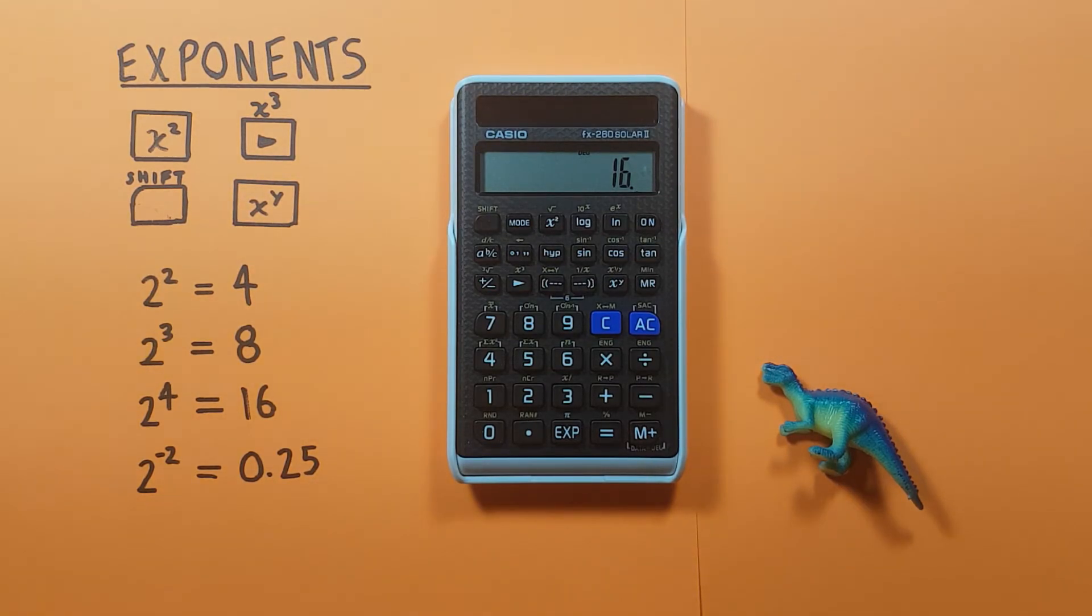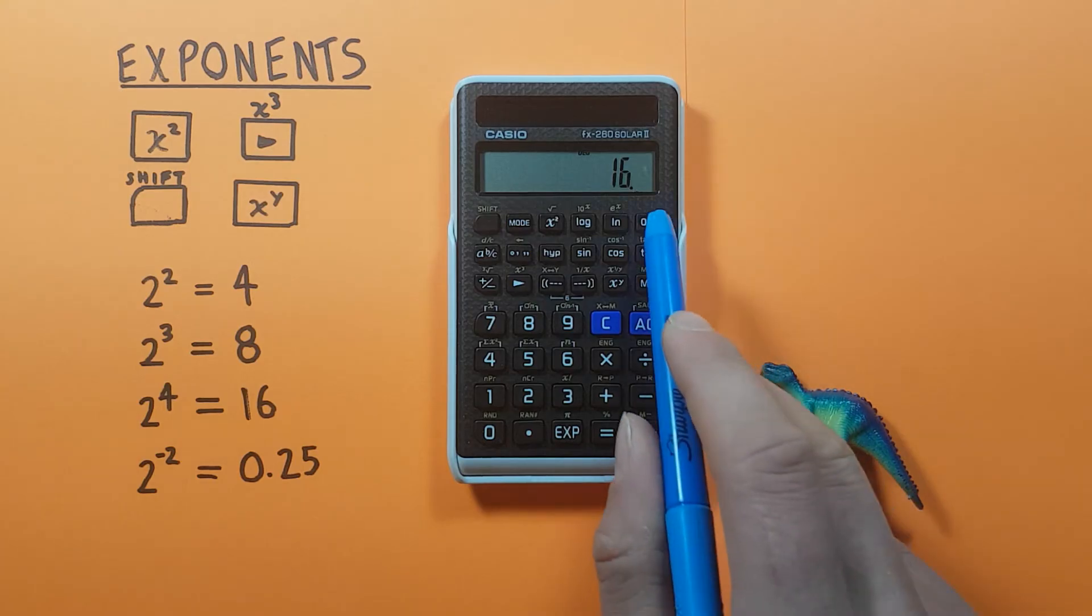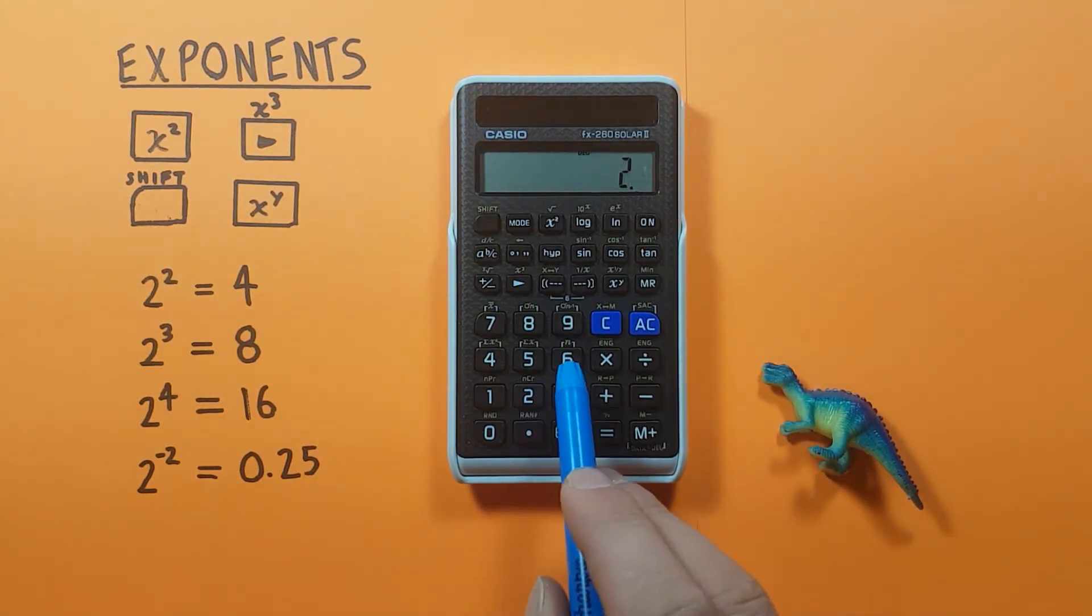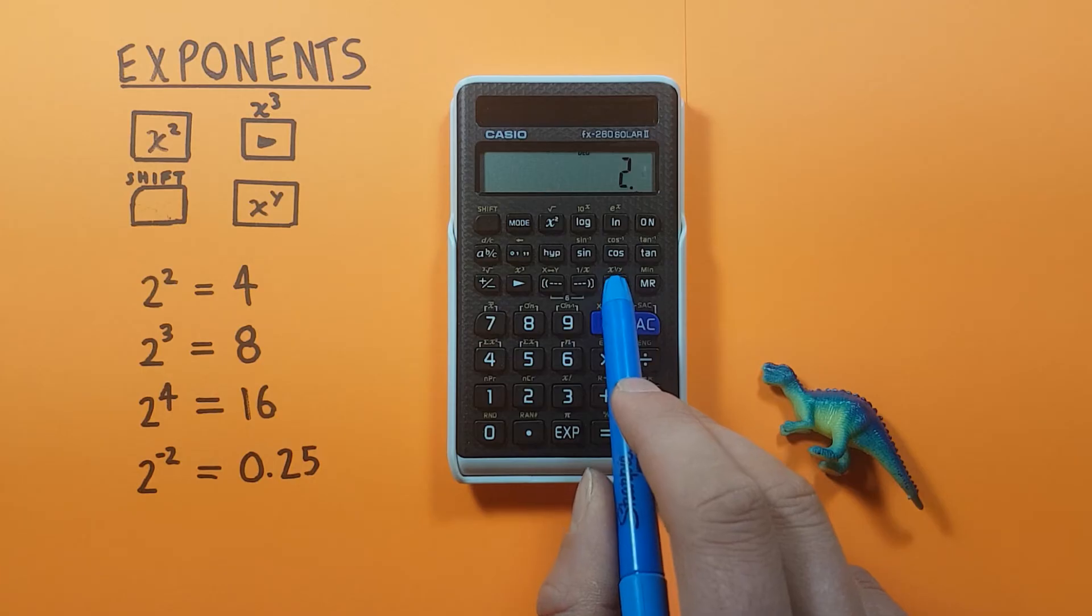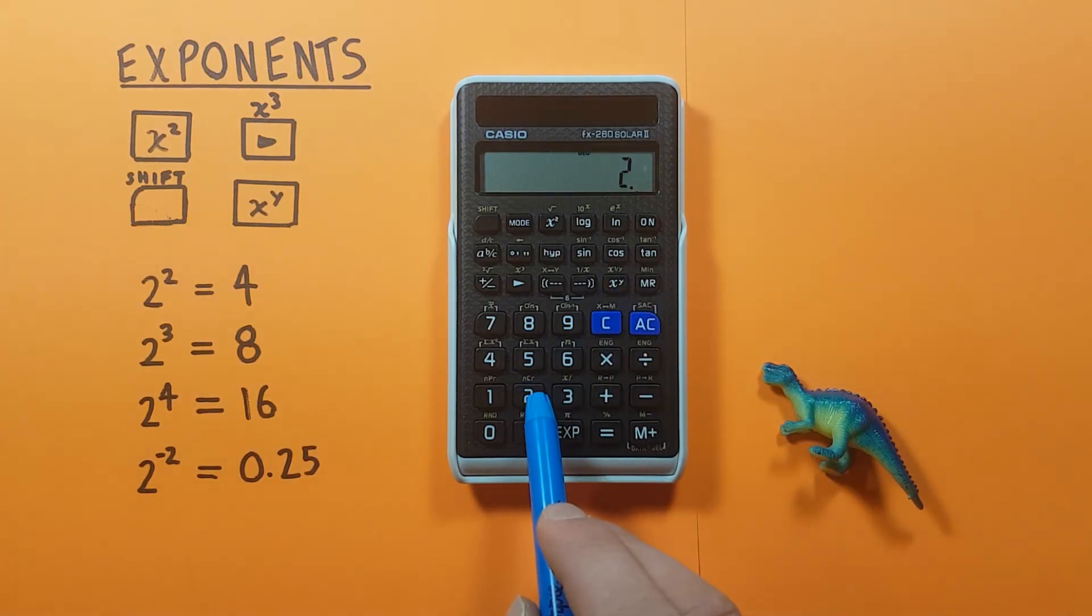This also works for negative exponents, so let's say we wanted to find 2 to the power of negative 2. We place 2 on the screen and then x to the y, 2, which is our exponent.